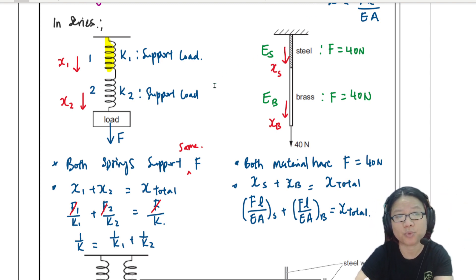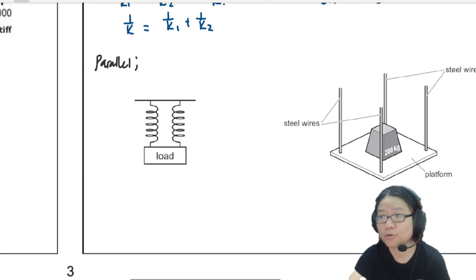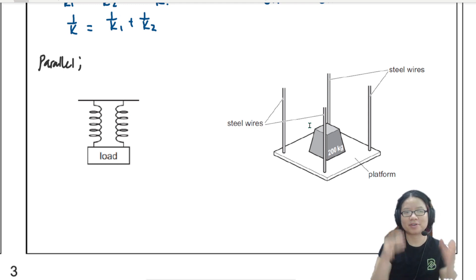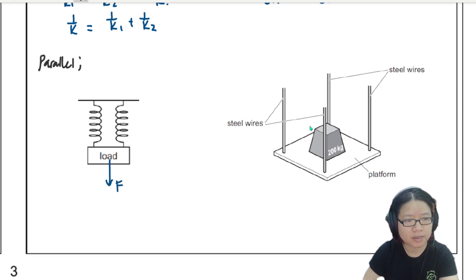But what happens when we place the spring in the next arrangement? Next, we're going to look at arrangement in parallel. So you will see that there are two different types of arrangements. There's a spring one for your reference, and then sometimes we can place multiple rods to support like a heavy object like this one.